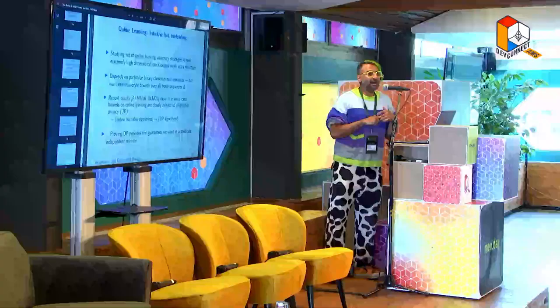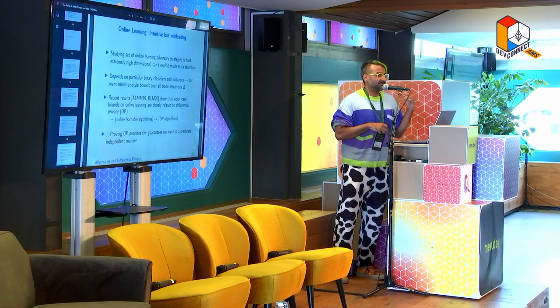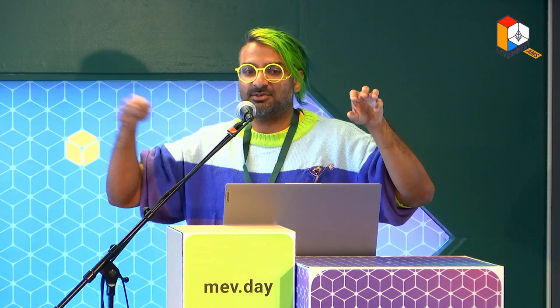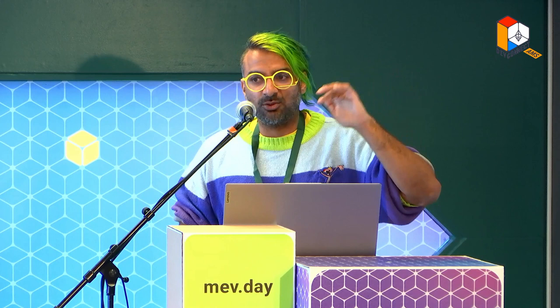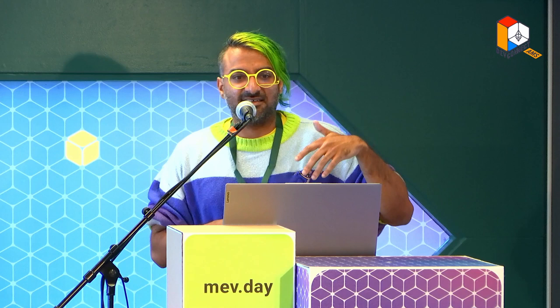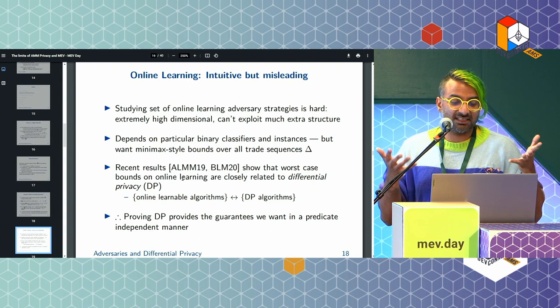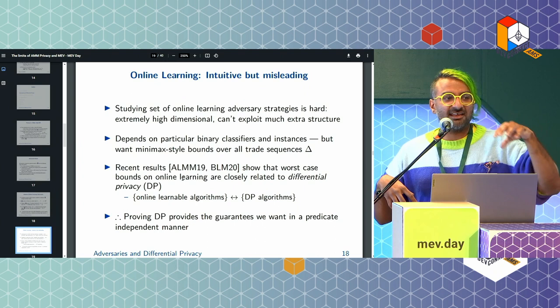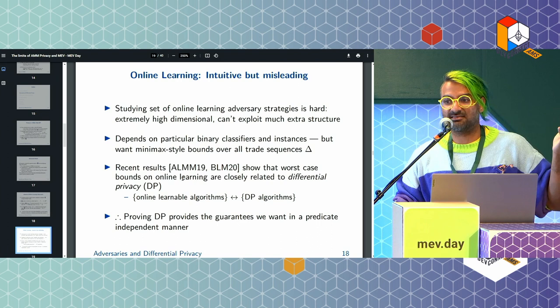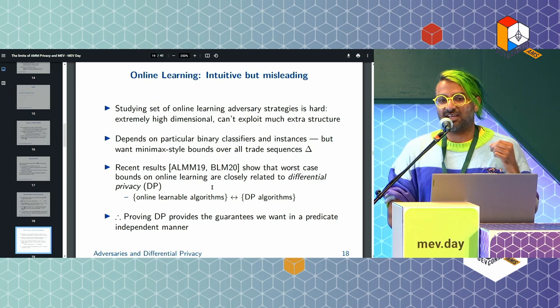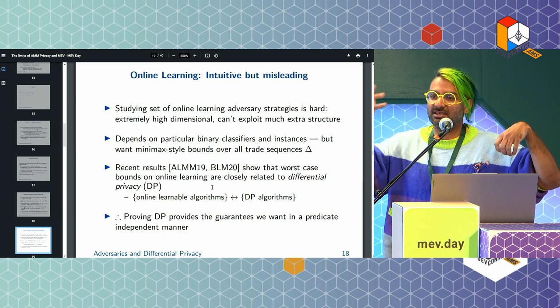One of what I consider the top theoretical computer science results of the last five years shows that online learnability — whether you can learn something from a sequence of data — is equivalent to something called differential privacy. Differential privacy is the notion of privacy that, for example, Apple's Face ID uses: Apple doesn't get your local face data because they add noise so they can't recover it perfectly. People showed from a complexity standpoint that algorithms that can online learn a sequence of things — like learning trade sizes — are the same as the differentially private ones. This suggests that to analyze how well an adversary can do, we should look at what differential privacy guarantees we can get.